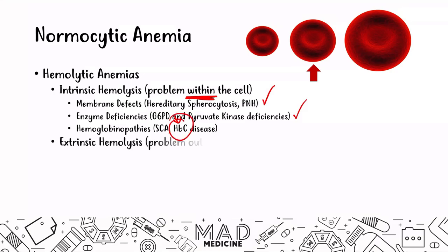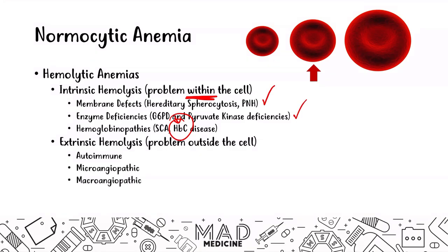This can also be due to extrinsic causes of hemolysis — problems outside of the cell — like autoimmune issues, issues with blood vessels that are small or large, and infections that can lead to extrinsic causes of hemolysis.